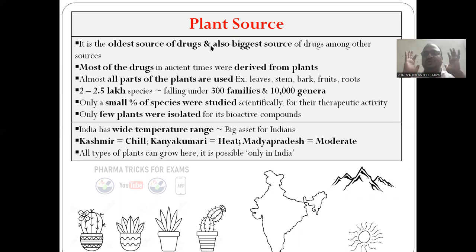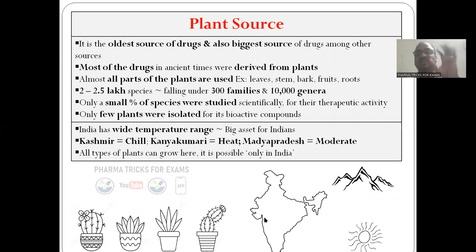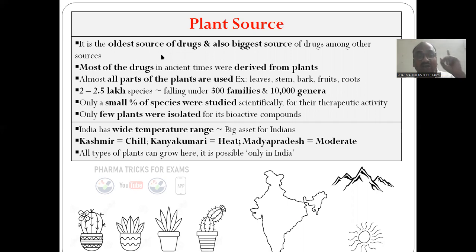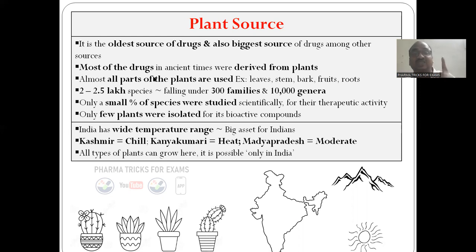First, we will see the plant source. It is the main source. Plants are the main source. We have one biggest advantage in India — it is possible only in India, not in any other countries. Plant source is the oldest source of drugs and also the biggest source of drugs among all other sources. Most of the drugs in ancient times were derived from plants only.